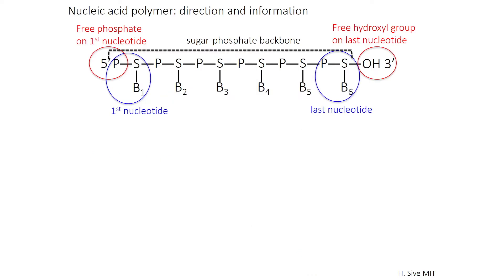If we look at a schematic of this, I've drawn you the sugar phosphate backbone, the base order, the first nucleotide, the last nucleotide, the free phosphate group at the 5' end, and the free hydroxyl group on the last nucleotide. The direction of polymerization is from 5' to 3' because you always add onto the 3' end.